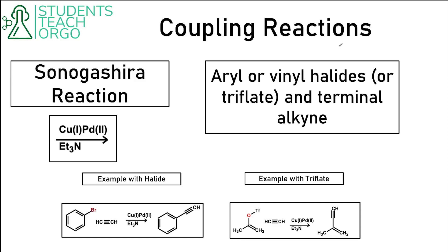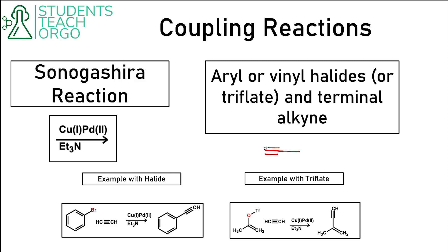The third and final coupling reaction is the Sonogashira reaction. We still have a palladium catalyst, but this one also has copper, and that's what makes the Sonogashira reagents different from the other two. We still need an aryl or vinyl halide or triflate, but we specifically also need a terminal alkyne — a triple bond where one end must be connected to a hydrogen, not a carbon. The bromine or triflate goes away and we make a bond between those carbons to give the coupled product. Personally, the Sonogashira is my favorite — I think it's the easiest.